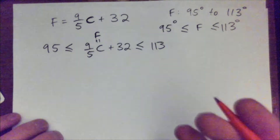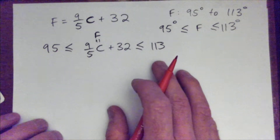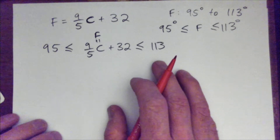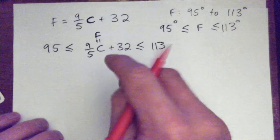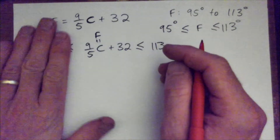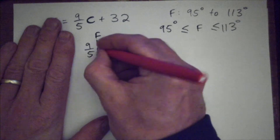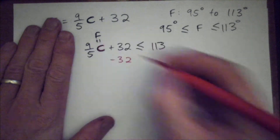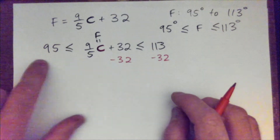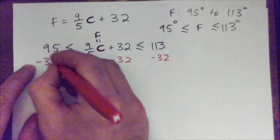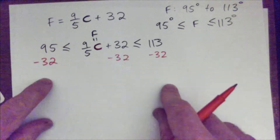...compound inequality. Like if it was just a regular inequality, you just subtract 32 from both sides, because we're going to solve for C. But the only difference with the compound inequality is you just subtract 32 from this side as well. So subtract 32 from everything.